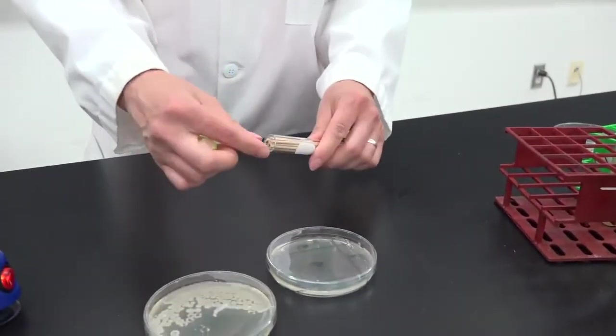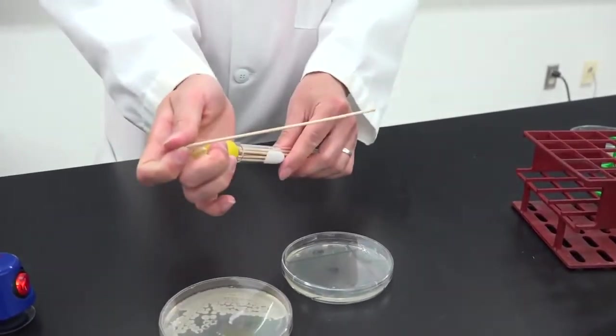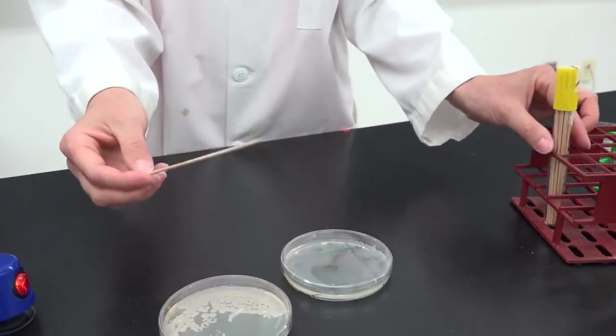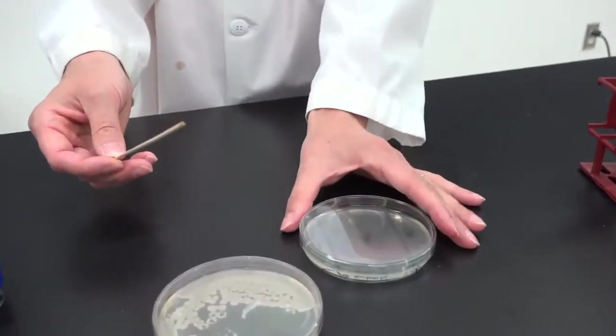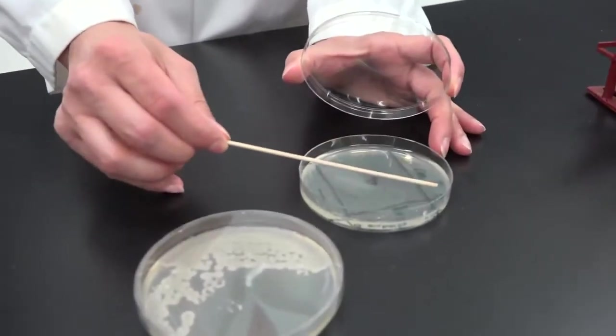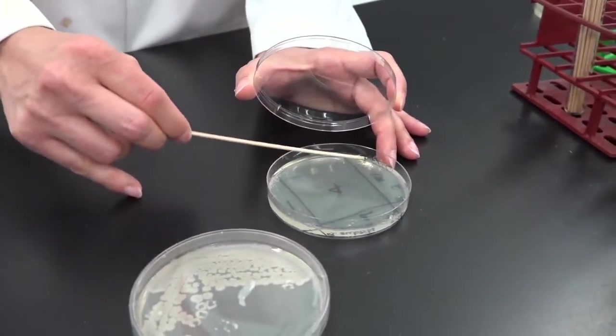Retrieve a third sterile stick from the tube, turn the plate 90 degrees, and spread the bacteria from quadrant two into quadrant three. Be sure not to press too hard so that you don't tear the agar.